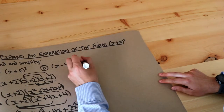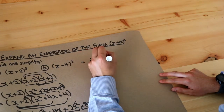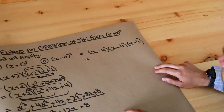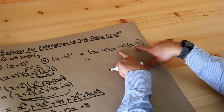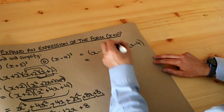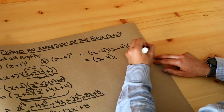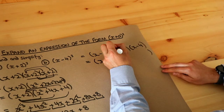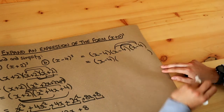Now let's do the second example. (x − 4) all cubed means x minus 4 times by itself times by itself. Following the same approach, I'll choose the last two brackets to expand first, leaving the first (x − 4) as it is. So I do each thing in the second bracket times each thing in the third: x times x, x times minus 4, minus 4 times x, and minus 4 times minus 4.